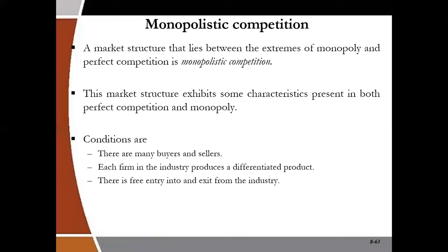On the number line shown earlier in the first video, monopolistic competition lies between the extremes of monopoly and perfect competition. It has characteristics of both. The characteristics of monopolistic competition are: number one, there are many buyers and sellers just like perfect competition, and there is free entry and free exit just like perfect competition. But the key feature from monopoly is that each firm produces a differentiated product.